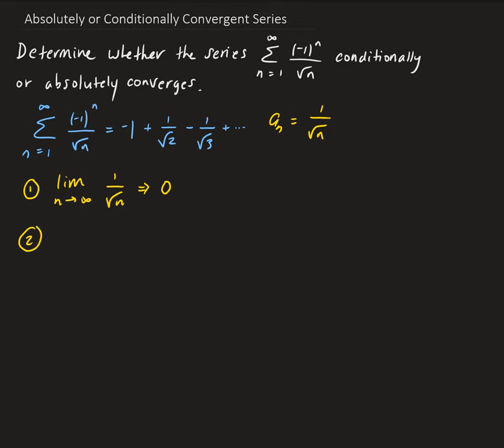Second condition: we want to show that the n+1 term is less than or equal to the nth term. That is, 1 over square root of n+1 is less than or equal to 1 over root n. This gives us root n less than or equal to square root of n+1, which is true on the interval from 1 to infinity.